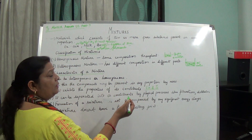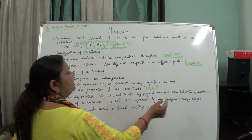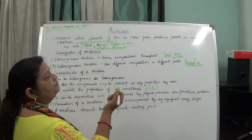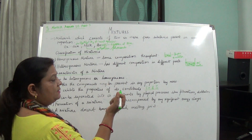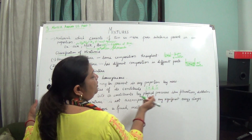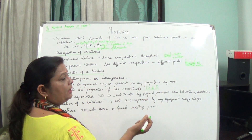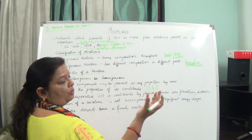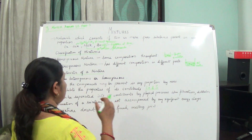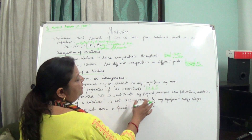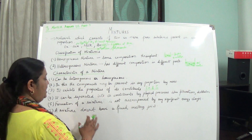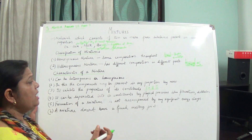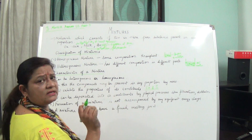If we take a mixture of sugar and water, we can do the distillation process in which water is collected in the beaker and sugar remains in the distillating flask. For filtration, if you take chalk powder and water and filter it, you get the chalk powder as the residue and water comes down as the filtrate. Also, the formation of a mixture is not accompanied by any significant energy change — neither energy is evolved nor absorbed.